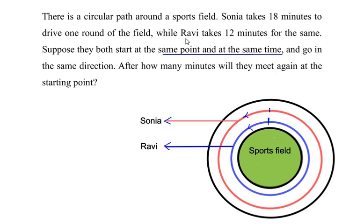So logically thinking, we can say that Ravi is going faster because he takes lesser minutes as compared to Sonia. So he will go one round the circle and he will come back to a point where Sonia is still traveling in the circular path.